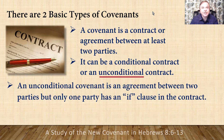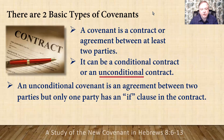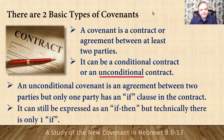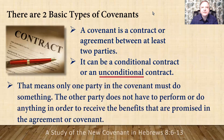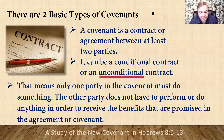An unconditional covenant is an agreement between two parties, but only one party has an if clause in the contract. It can still be expressed as an if-then, but technically there is only one if. That means only one party in the covenant must do something — the other party does not have to perform or do anything in order to receive the benefits promised in the agreement.